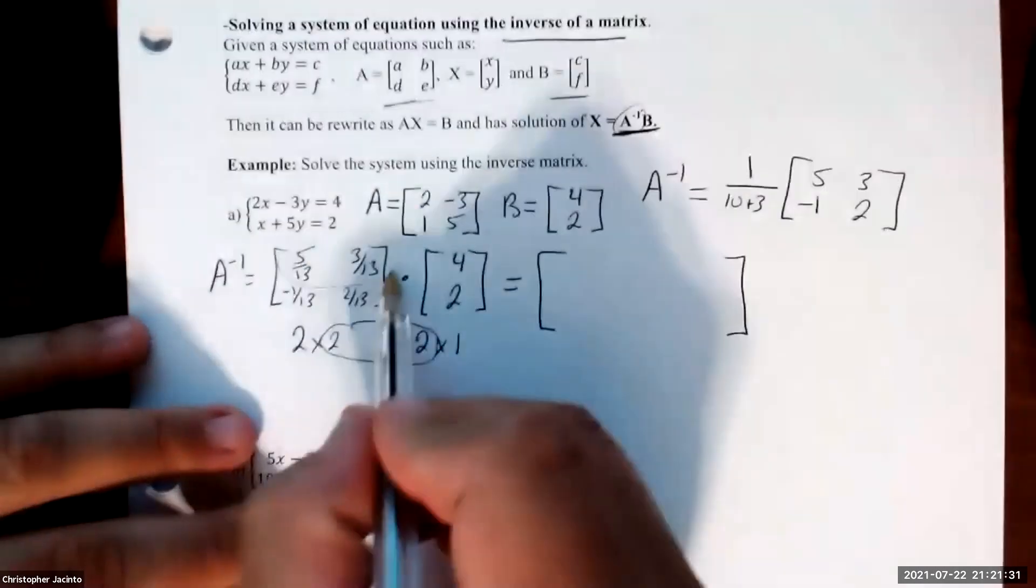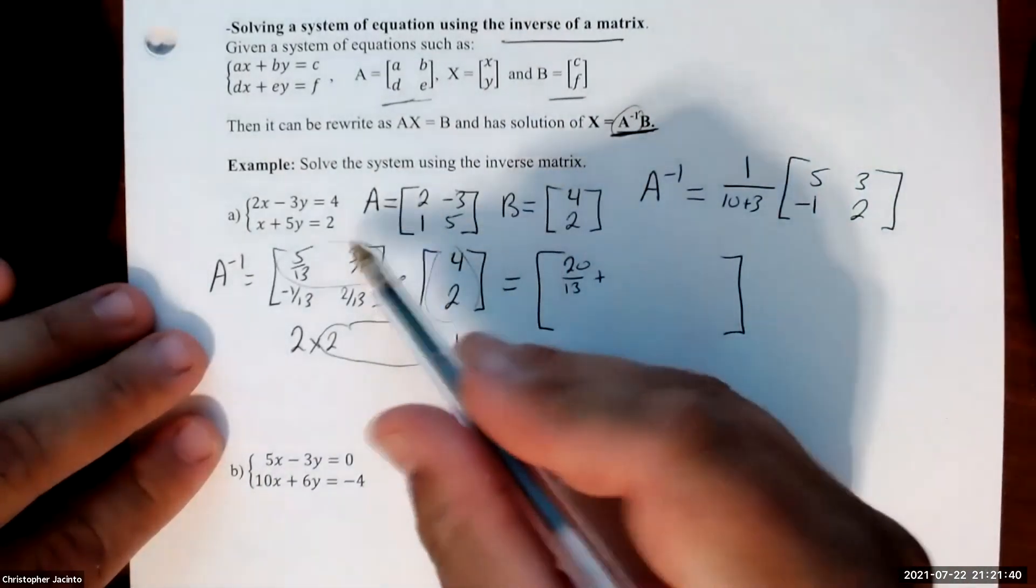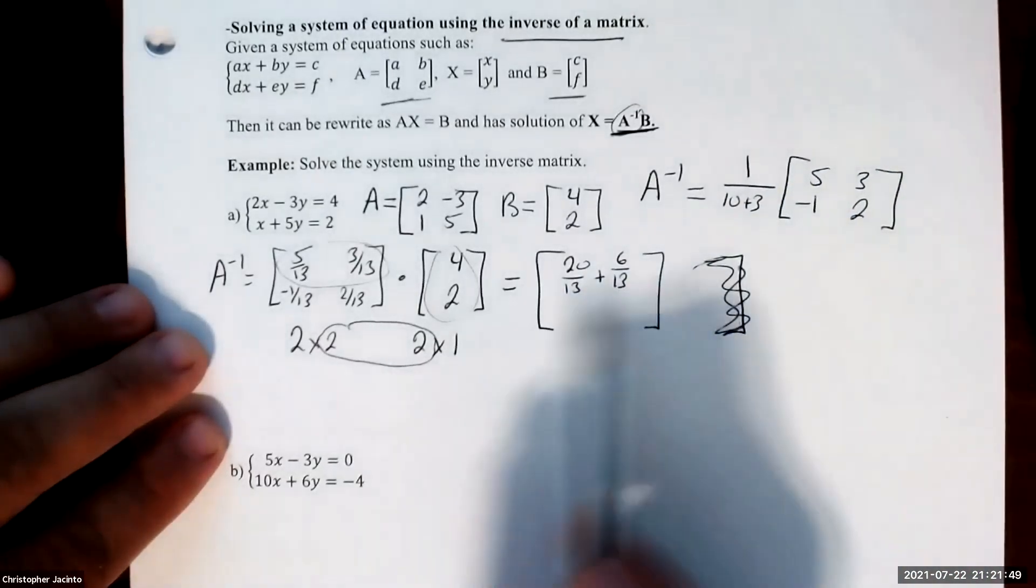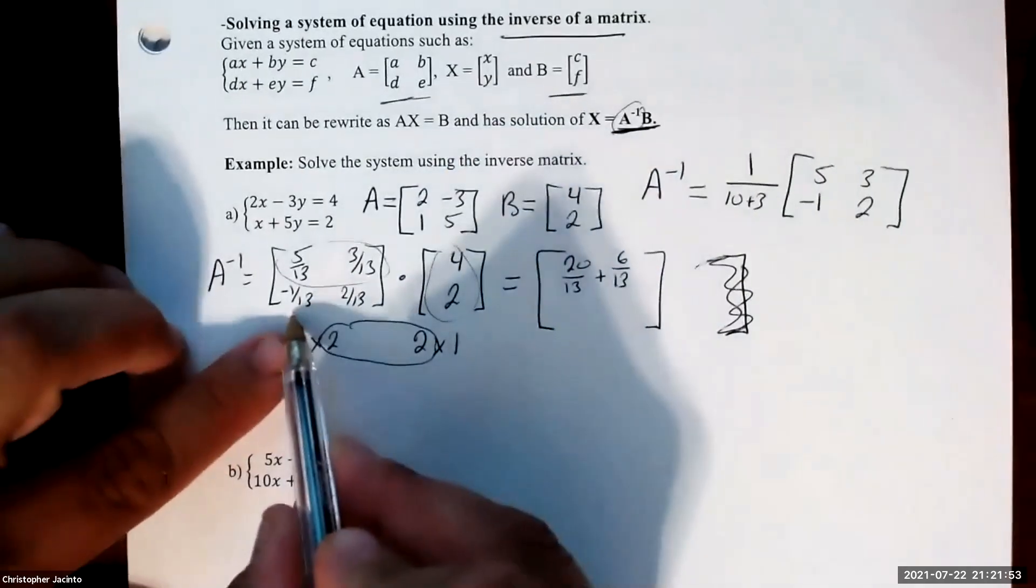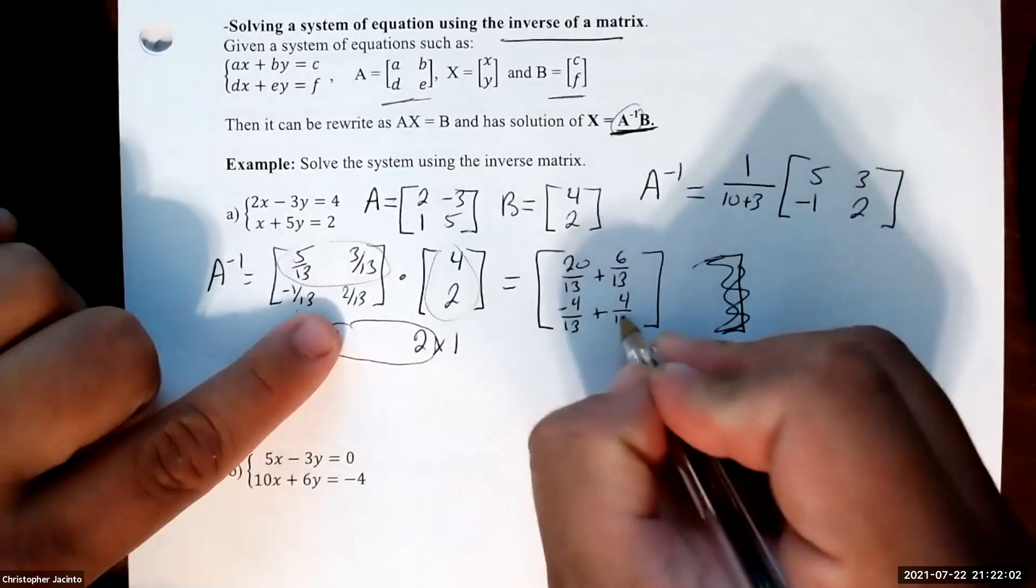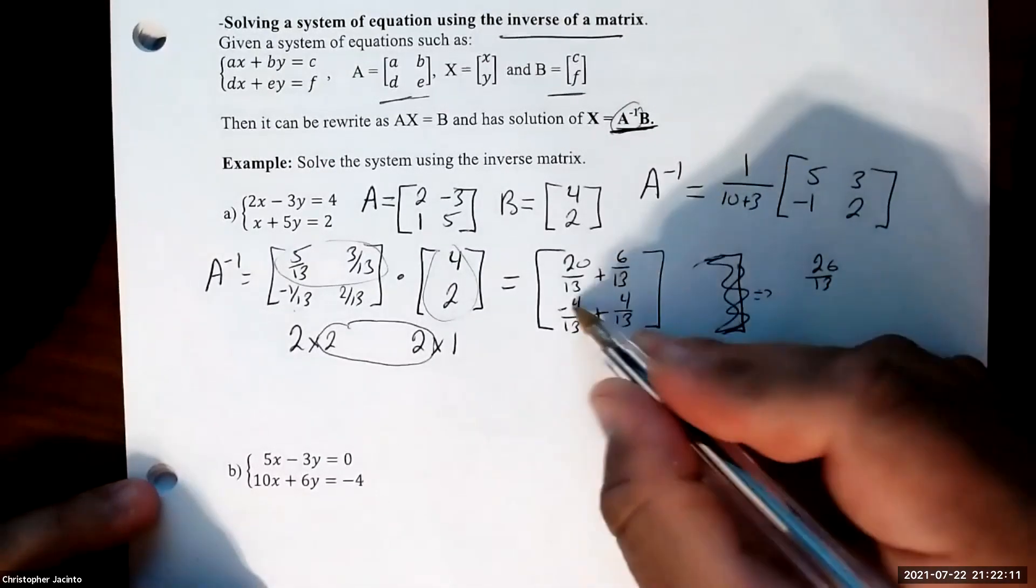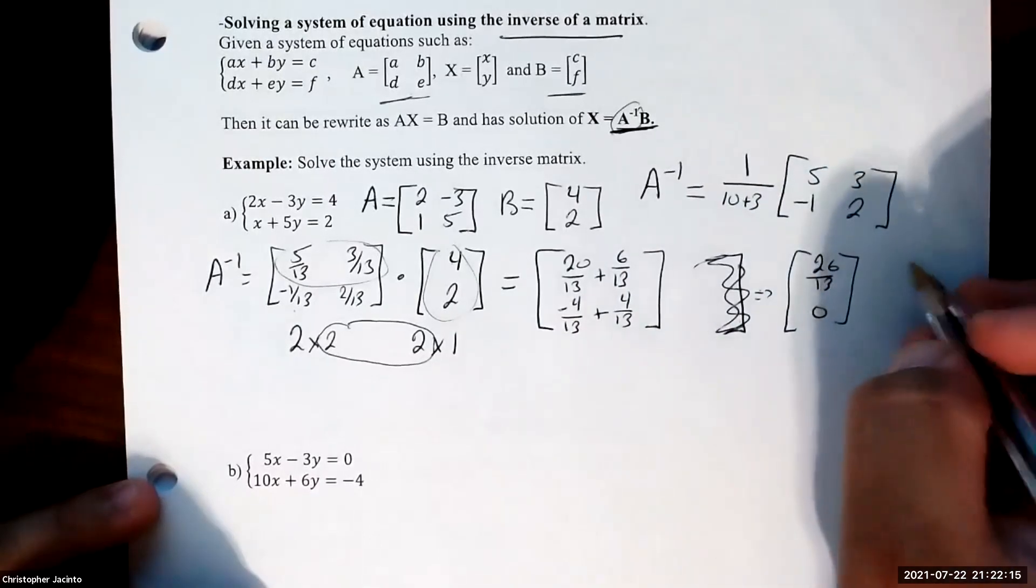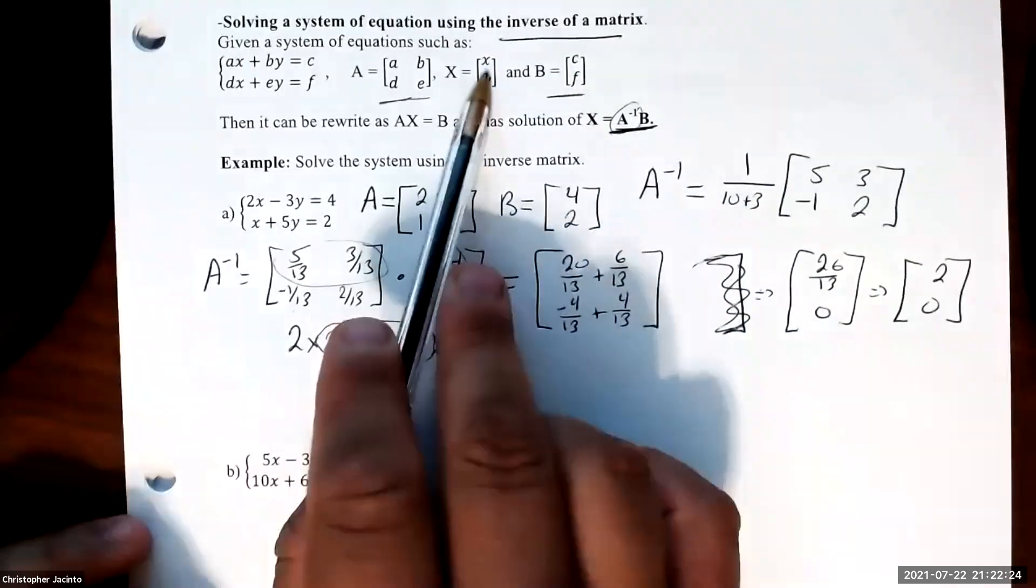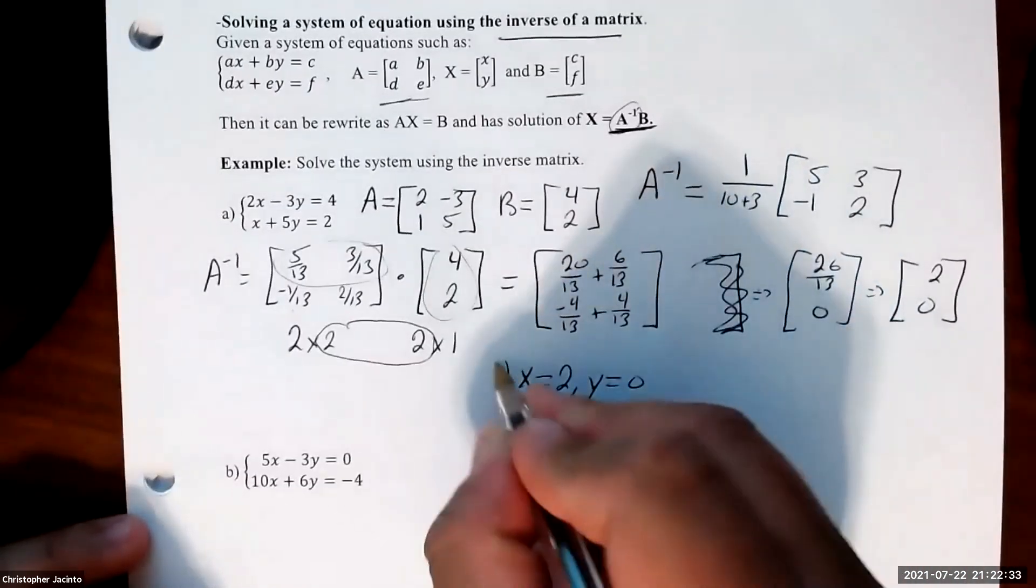We're just going to be multiplying these matrices out. Remember, row times column. So 5 times 4 is 20 over 13, plus 3 times 2 is 6 over 13. That's 26 over 13. Next, negative 1 times 4 is negative 4, plus 2 times 2 is 4 over 13. That's 0. So we get 26 over 13, which is 2, and 0. Therefore, x equals 2 and y equals 0.